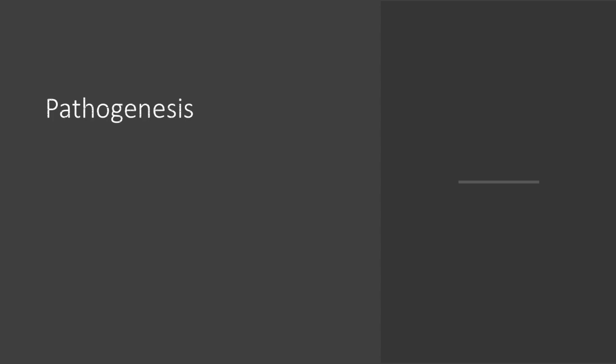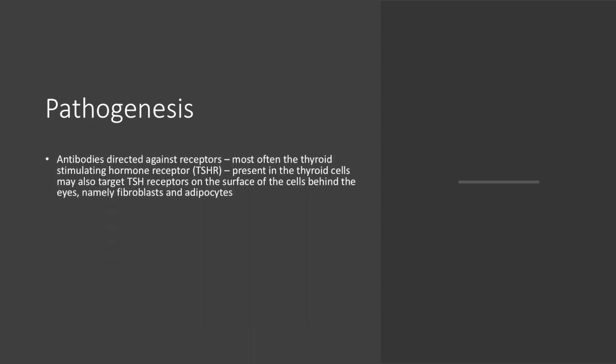We will now look at the pathogenesis. Autoantibodies directed against receptors, most often the thyroid-stimulating hormone receptor present in the thyroid cells, may also target TSH receptors on the surface of the cells behind the eyes, namely fibroblasts and adipocytes.